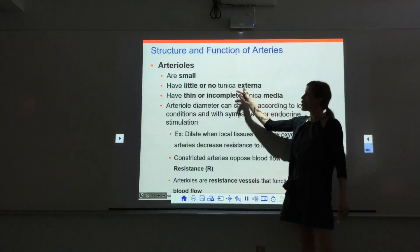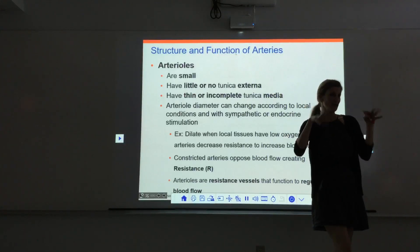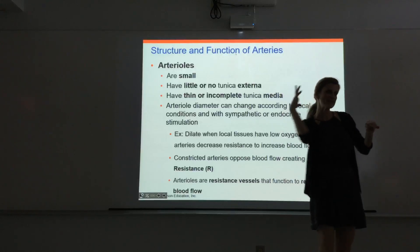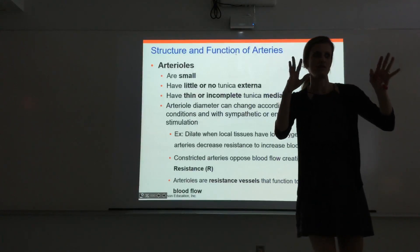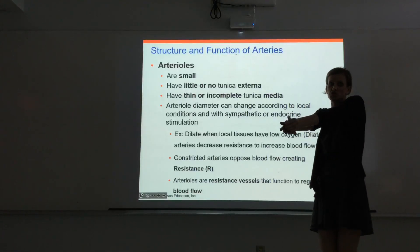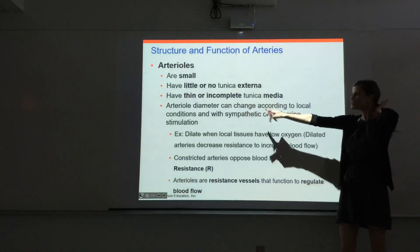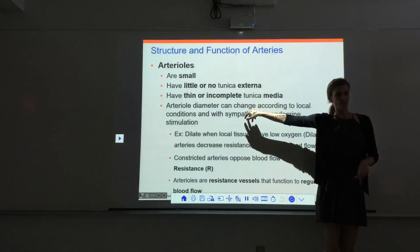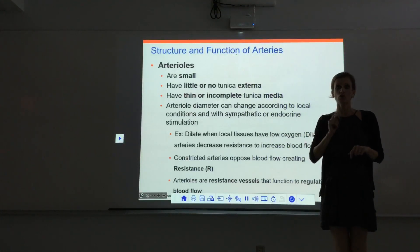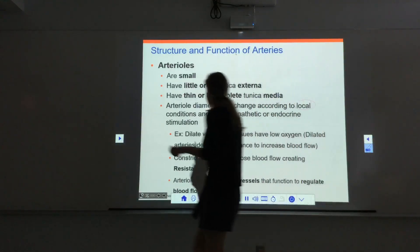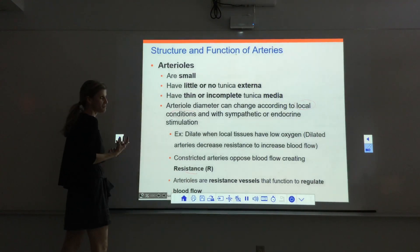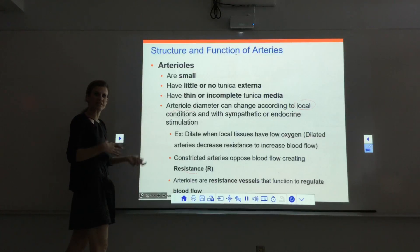Arterioles are the smallest arteries. They have little or no tunica externa, and the tunica media is sparse — maybe a couple concentric layers of muscle, or patchy. They're getting very thin as we progress down toward the capillaries, losing the outer layers. Arteriolar diameter can change according to the sympathetic nervous system — epinephrine and norepinephrine can tell arterioles to constrict or dilate — but they are also controlled locally according to local conditions.